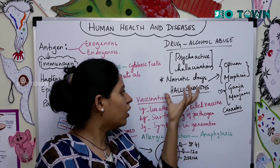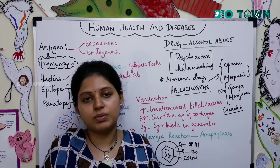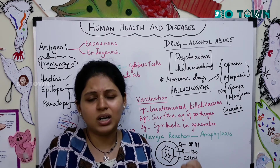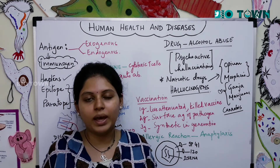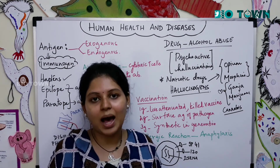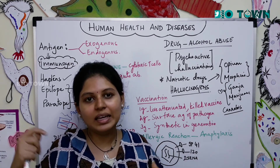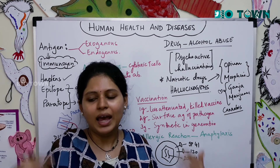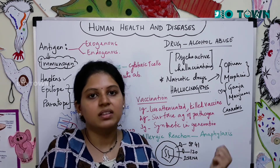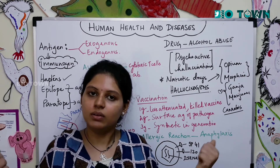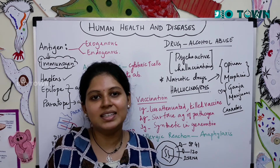Hallucinogens like weed, marijuana, and ganja cause severe hallucinations where people don't know what is happening around them. There is a high euphoric feeling where they act in unusual ways. Narcotic drugs, like opium from poppy seeds and morphine, are used medically as painkillers during surgery, but when they become a routine drug, psychoactive effects follow. The central nervous system, autonomic nervous system, heart, and internal organs are all damaged.